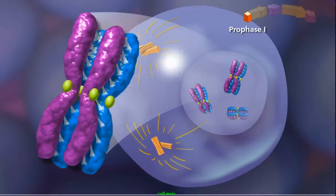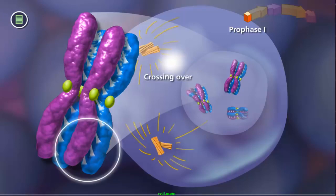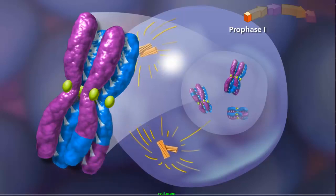Once this structure is formed, the second event, called crossing over, can occur. During crossing over, a physical exchange between chromosome segments of non-sister chromatids occurs, increasing genetic diversity.